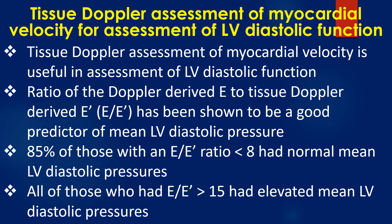The ratio of Doppler-derived E to tissue Doppler-derived E prime — the E by E prime ratio — has been shown to be a good predictor of mean left ventricular diastolic pressure.